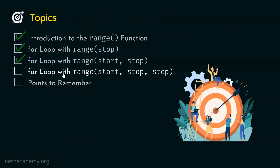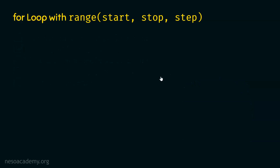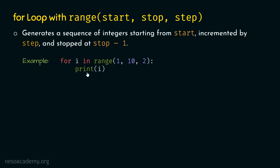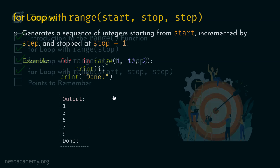Now let's look at for loop with range start, stop, and step. With three arguments, range generates a sequence starting from start, incremented by step, and stopping at stop minus one. For example: for i in range(1, 10, 2). With step value two, we get the sequence one, three, five, seven, and nine. With print(i) inside the loop and print 'done' after, the output is one, three, five, seven, nine, and then done.